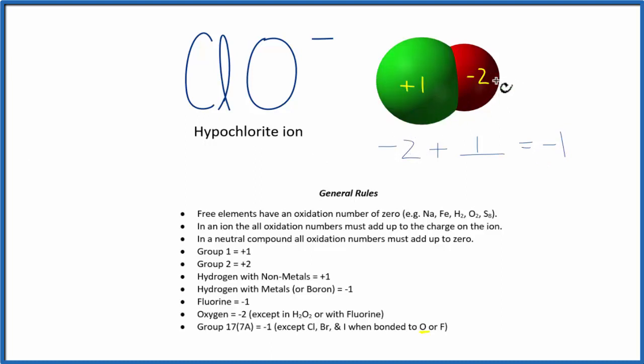And if we add these up, we get the minus 1, which is the charge on the entire ion. So to recap, we found the oxidation number for the elements we knew, the oxygen here, and then we used that information along with the charge on the total ion to figure out the oxidation number for the element we didn't know, the chlorine.